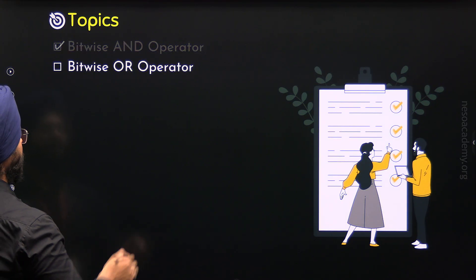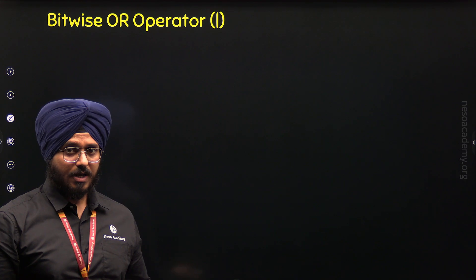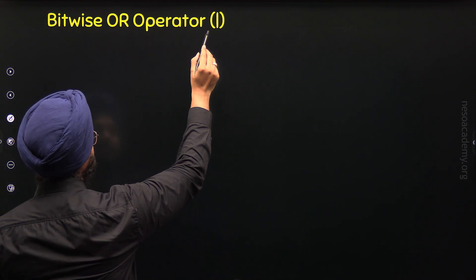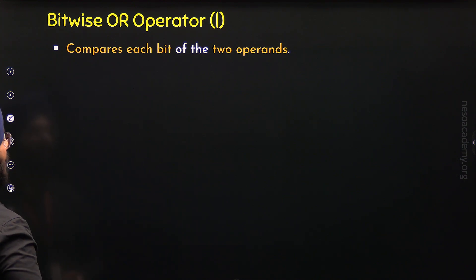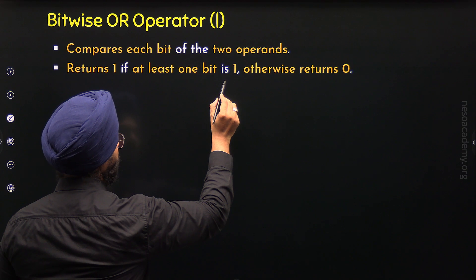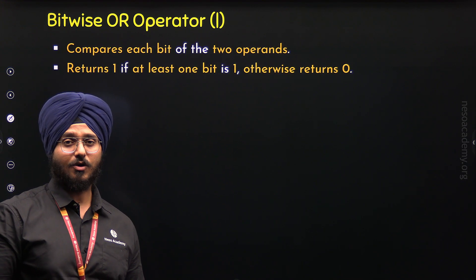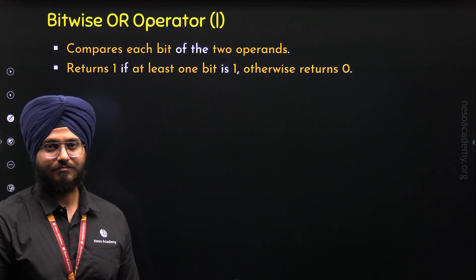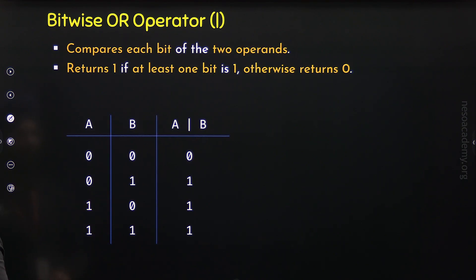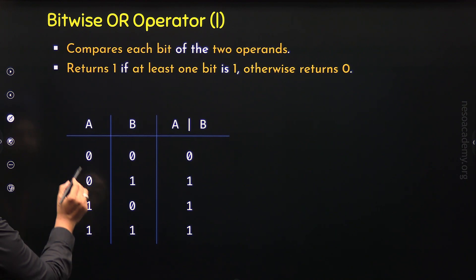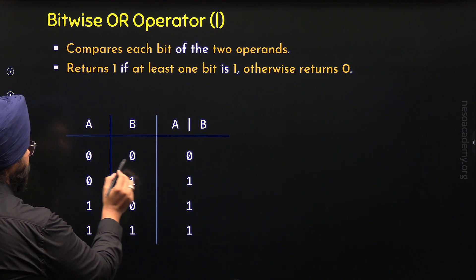Now let's move to the second topic to understand the Bitwise OR Operator. The Bitwise OR Operator is represented by the single pipe symbol, and it can be used to compare each bit of the two operands. But it returns 1 if at least one bit is set to 1; otherwise it returns 0. From the truth table of the Bitwise OR Operator, we can conclude that when at least one bit is 1, we get 1 as the result; otherwise we get 0.